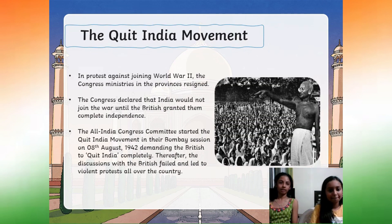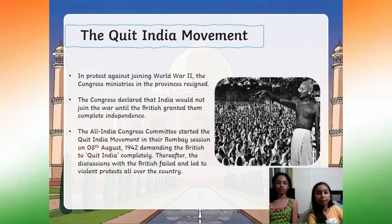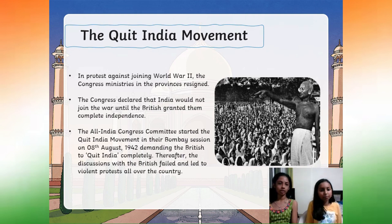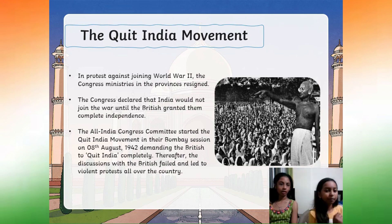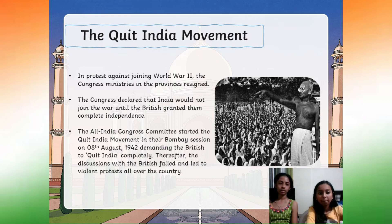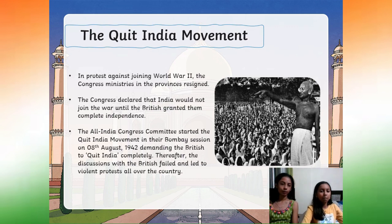The Quit India Movement. In protest against joining World War II, the Congress Ministries in the provinces resigned. The Congress declared that India would not join the war until the British granted complete independence. The All India Congress Committee started the Quit India Movement in their Bombay session on 8 August 1942, demanding the British quit India completely. Thereafter, discussions with the British failed and led to violent protests all over the country.